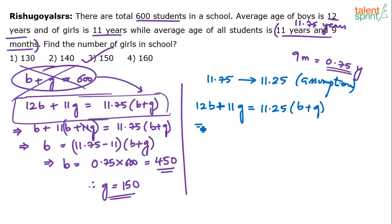We get b plus 11(b plus g) equals 11.25(b plus g), so b equals (11.25 minus 11) times (b plus g), which is 0.25 times 600.